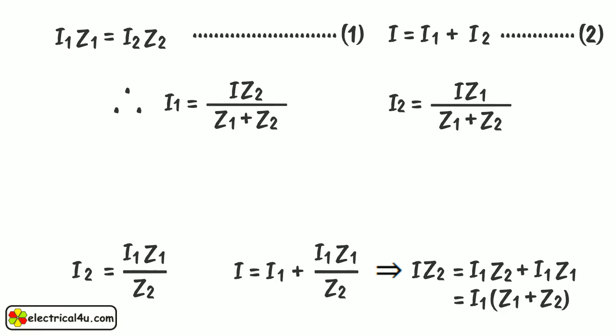From these expressions of current, we can conclude that current in any of the parallel paths is total current into impedance of the path through which the current is not determined, divided by sum of impedance of parallel paths. Hope you got a basic idea. Thank you.